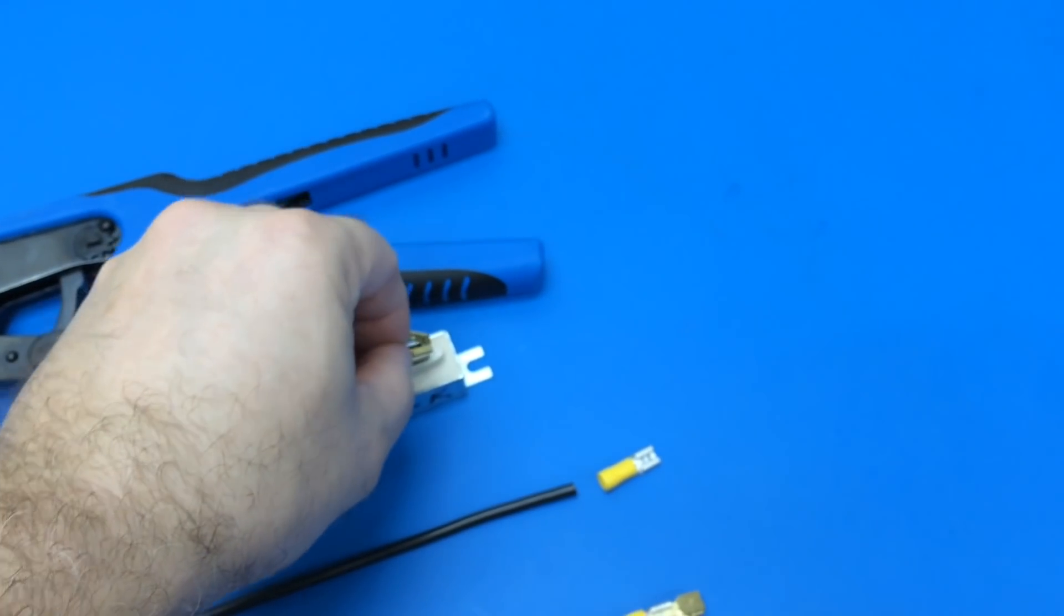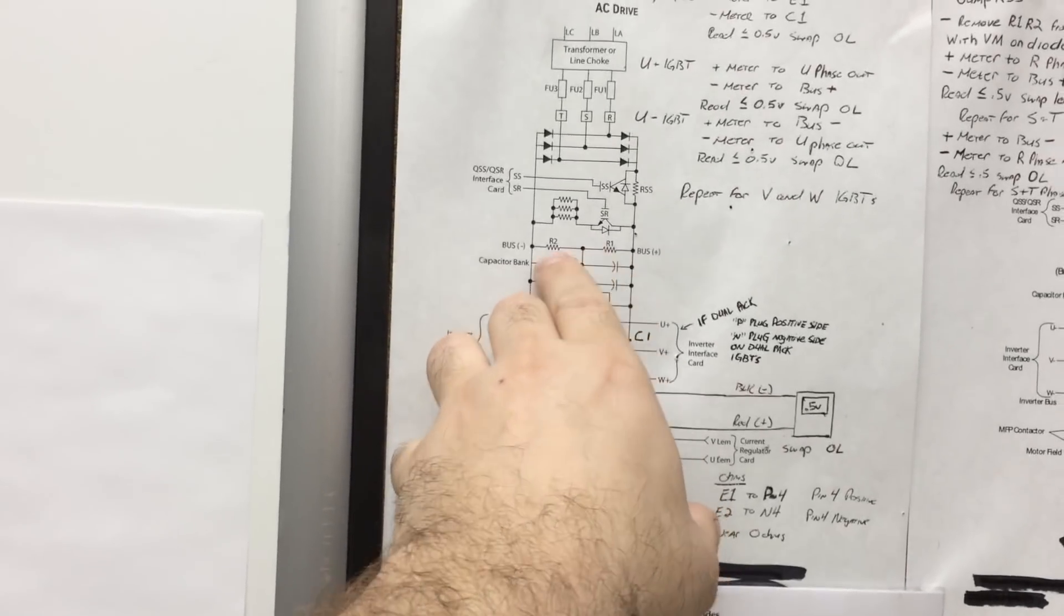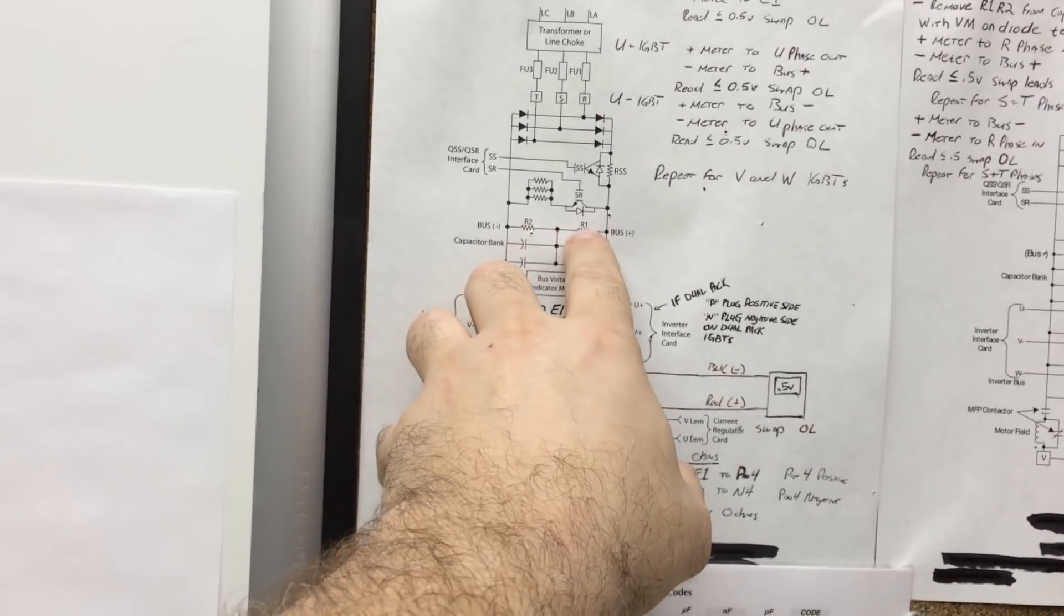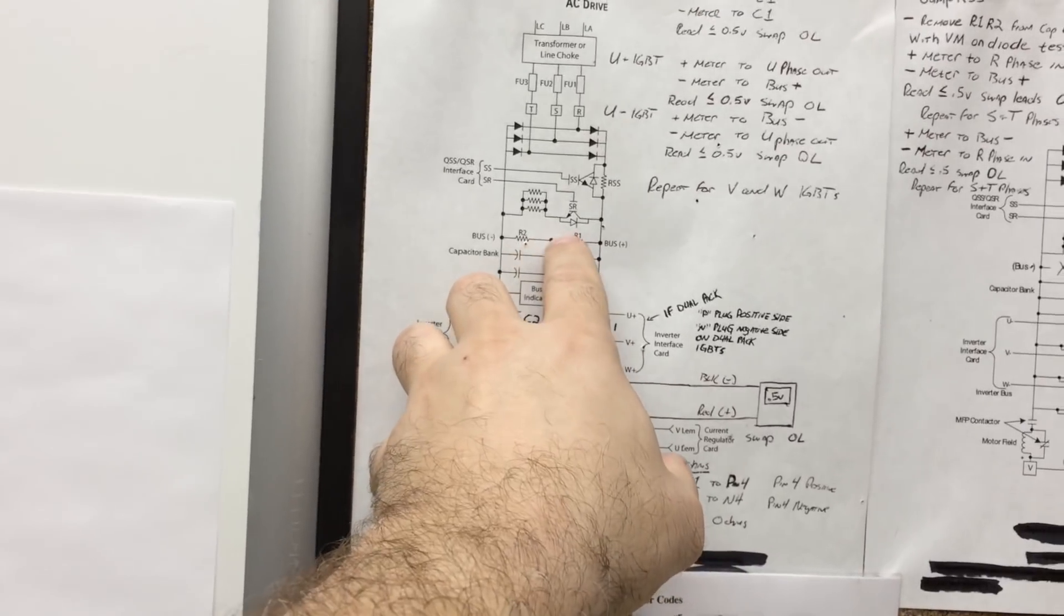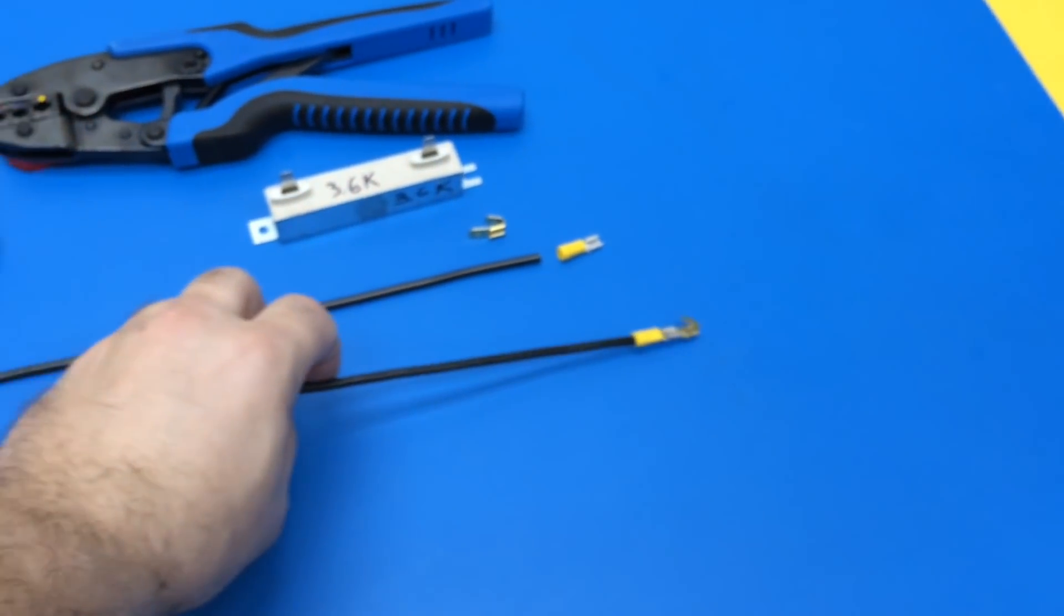They really need it, so it's between two large wattage 50 watt 3,600 ohm resistors. We've got to put that piggyback on there so that two of them will connect. Two wires connect - one jumps from here to here, one jumps from here to the DC bus.